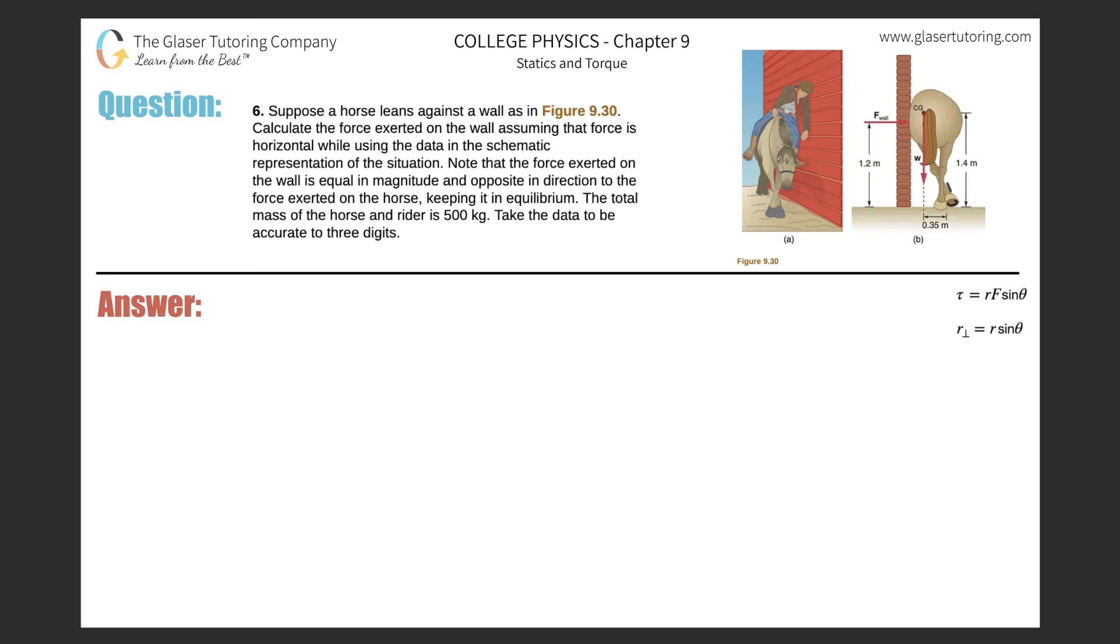Number six. Suppose a horse leans against the wall as in figure 9.30. Calculate the force exerted on the wall assuming that force is horizontal while using the data in the schematic representation of the situation. Note that the force exerted on the wall is equal in magnitude and opposite direction of the force exerted on the horse, keeping it in equilibrium. The total mass of the horse and the rider is 500 kilograms. So here's our picture.